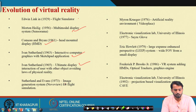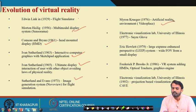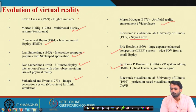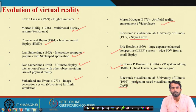Sutherland also invented an image generation system for flight simulation. Then came the artificial reality environment by Myron Krueger in 1976, and the Cyberglobe — an interaction device invented in 1977 at the Electronic Visualization Lab of University of Illinois. Eric Howlett developed the Large Expanse Enhanced Perspective system for wide field of view from a small display. Brooks Jr. invented a VR system adding HMDs, optical trackers, and graphics engines. Finally, the CAVE system, a VR visualization system, was developed at the same Electronic Visualization Lab of University of Illinois.